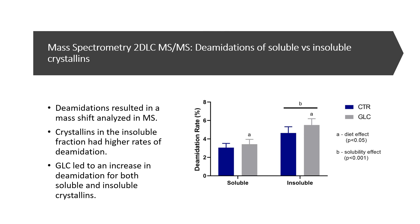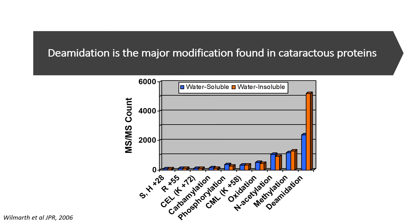We were able to extract the lens proteins and separate them into soluble and insoluble fractions. These were sent to OHSU where they were analyzed through a mass spectrometer. Deamidations resulted in a mass shift detected by the mass spec. We found that crystallins in the insoluble fraction had higher rates of deamidation, and that glucose led to an increase in deamidation for both soluble and insoluble crystallins. Comparing our mouse models to other researchers confirmed that the primary modification associated with insolubility is deamidation, validating our mouse model.